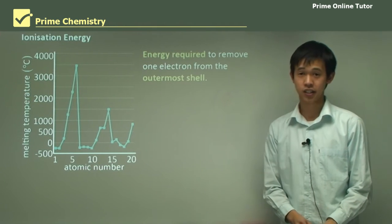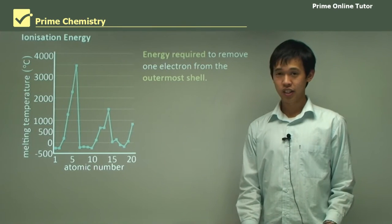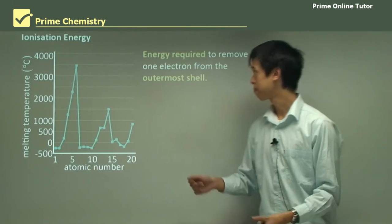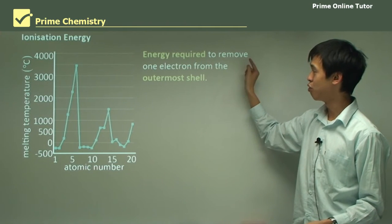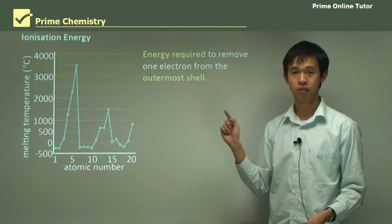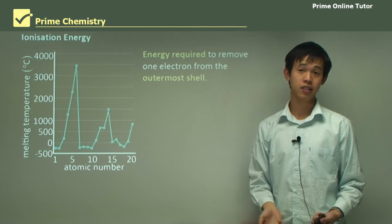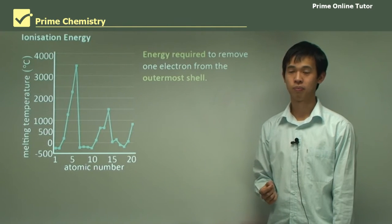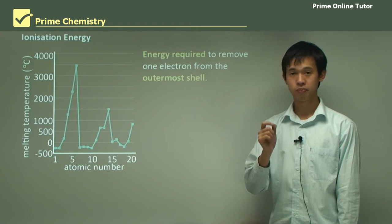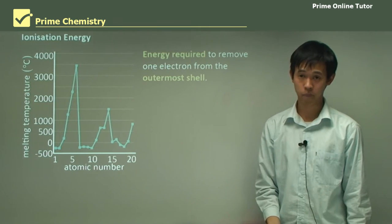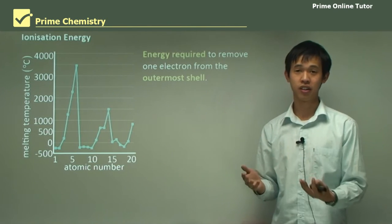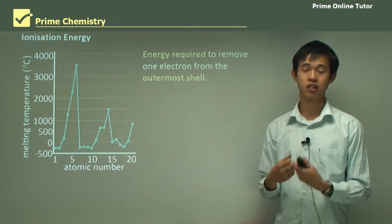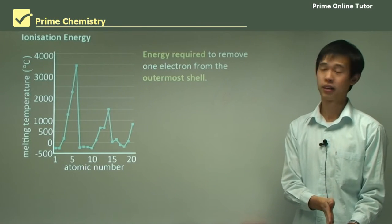We move on to the next one, which is called ionization energy. Ionization energy is related to ions and electrons in the outer shell — it's the energy required to remove one electron from the outer shell. If we think about something like sodium, which has one electron in its outer shell, it's not going to be very difficult to remove that electron because it wants to get rid of it anyway. If we move to say helium or neon, where it has a full outer shell, it wants to keep that electron, so it's going to take more energy to ionize that element compared to a group 1 metal element.